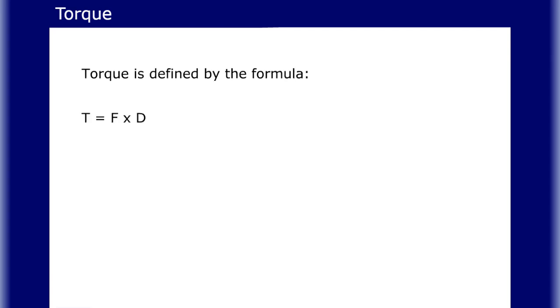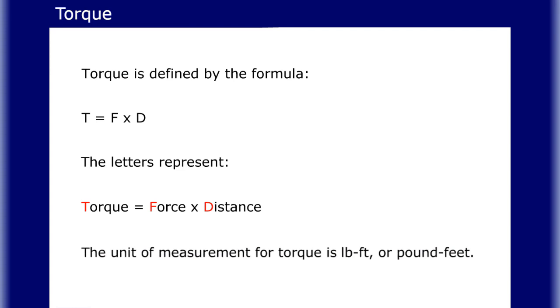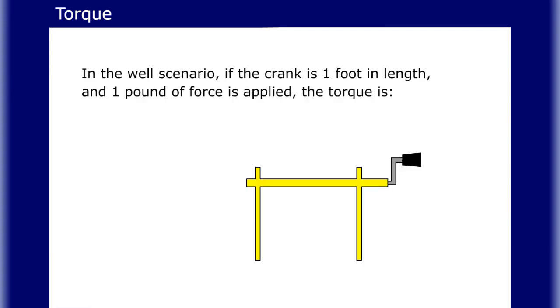Torque is defined by the formula T equals F times D. The letters represent: Torque equals Force times Distance. The unit of measurement for torque is pound-foot, or pound-feet.